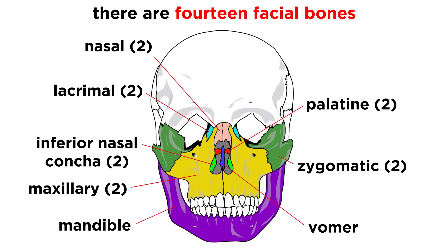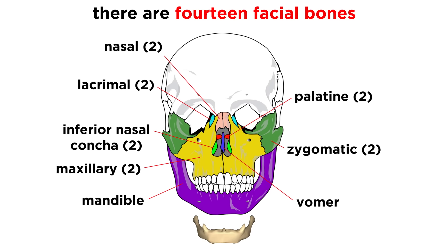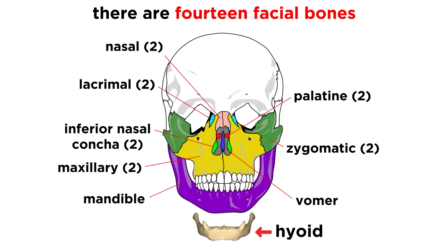Moving on to the facial bones, of which there are fourteen, we can start with the mandible, which is the lower jaw bone. Then there are maxillary bones, which form the upper jaw and part of the face. Next we have two zygomatic bones, which are the cheekbones, nasal bones which make up the bridge of the nose, lacrimal bones, palatine bones, the vomer, and inferior nasal conchi. Lastly, technically not part of the skull, there is also the hyoid bone, which sits just below the mandible and does not connect with any other bone.